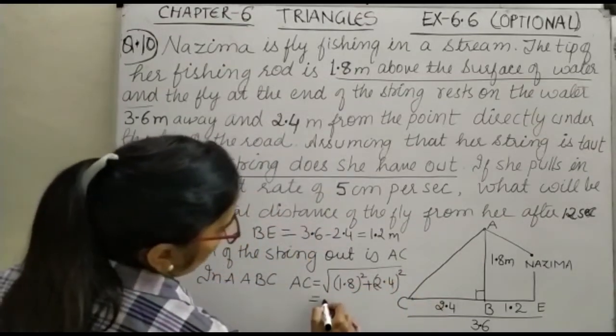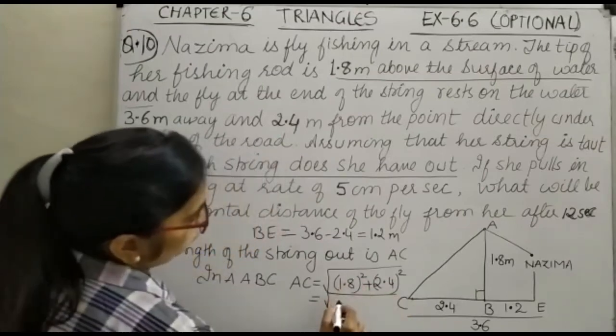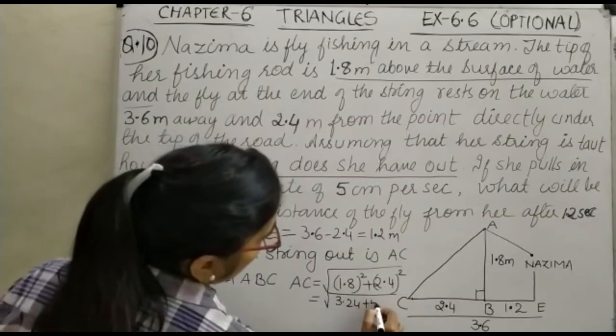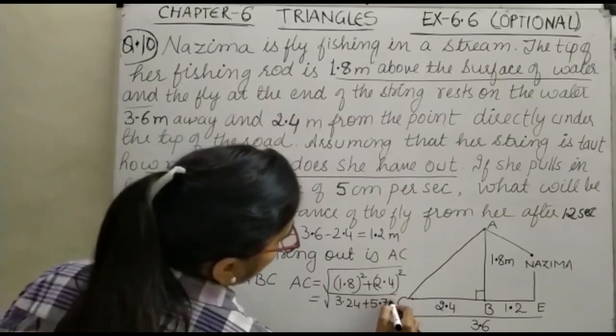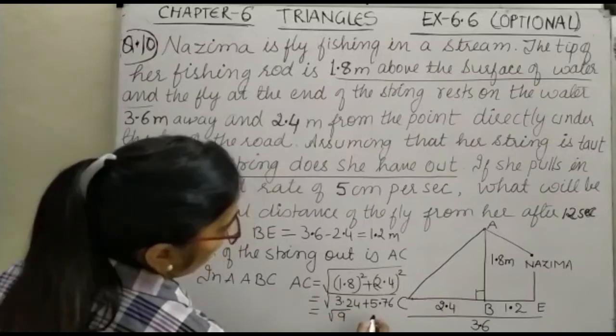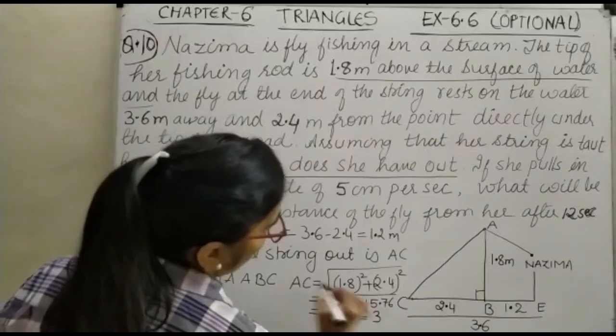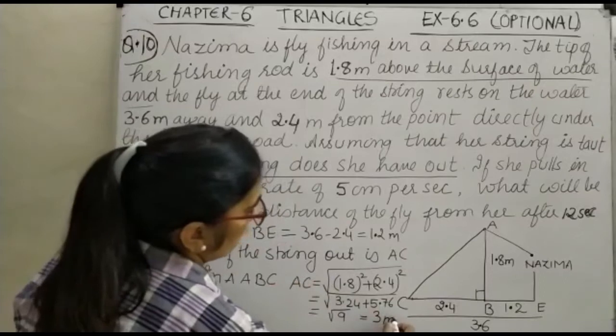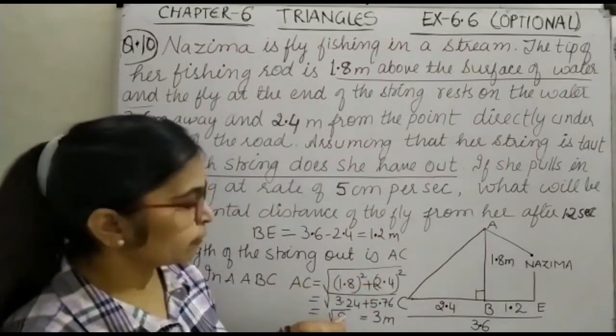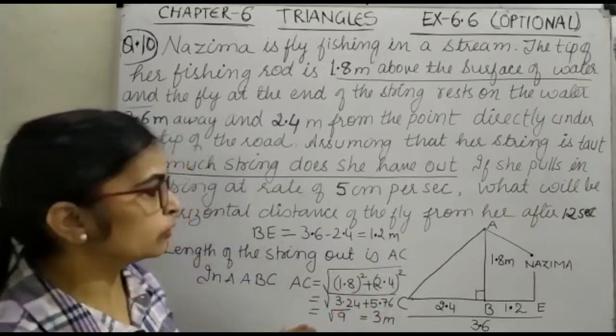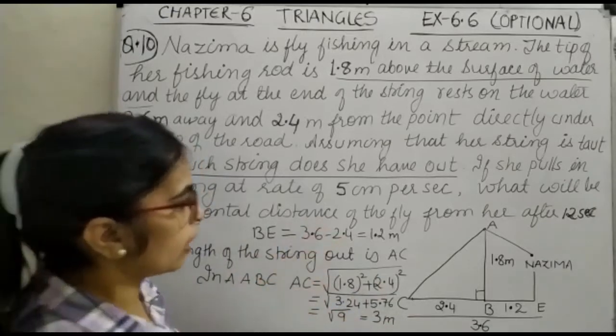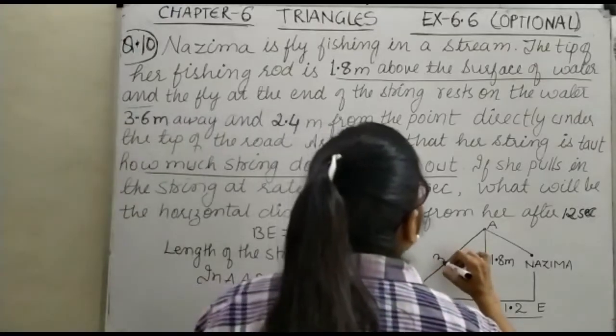AC is equal to under root 1.8 square plus 2.4 the whole square. This is equal to 3.24 plus 5.76. This is 9 and no doubt this is equal to 3 meter. This will be plus or minus 3. But as you know, the length cannot be negative. Therefore, the length of the string which is out is your 3 meter.